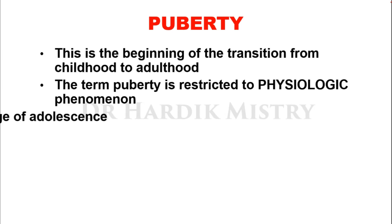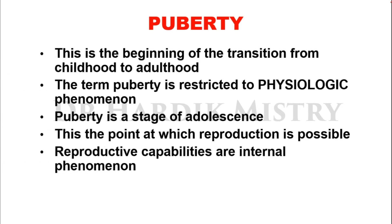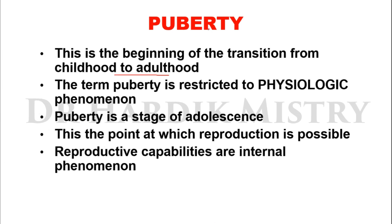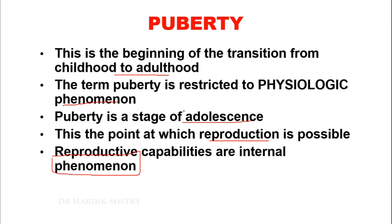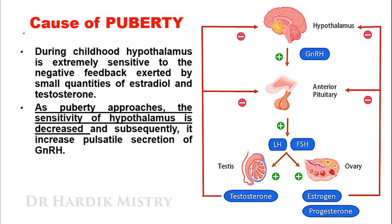What is puberty? Puberty is the beginning of the transition from childhood to adulthood. The term puberty is restricted to the physiologic phenomena. Puberty is a stage of adolescence and this is the point at which reproduction is possible. Reproductive capabilities are the internal phenomena, so puberty is a physiologic phenomena.